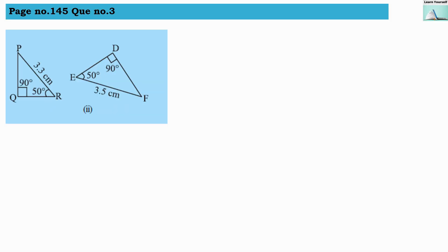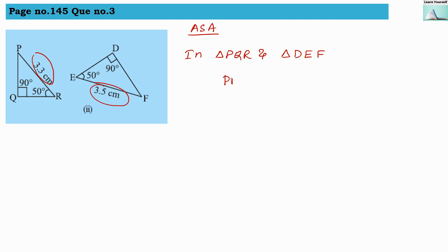For the second pair, checking triangle PQR and triangle DEF using ASA: PR is 3.3 cm whereas EF is 3.5 cm, so the sides are not equal. Angle Q equals angle D — both 90° — and angle R equals angle E — both 50°. But since no equal side is present, these two triangles are not congruent with each other.